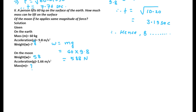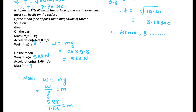On the Moon, the weight remains 588 Newtons (same force the person can exert). So we find mass using m = Weight/g = 588/1.66 = 354.21 kg. Therefore, the person can lift approximately 354.21 kg on the surface of the Moon.